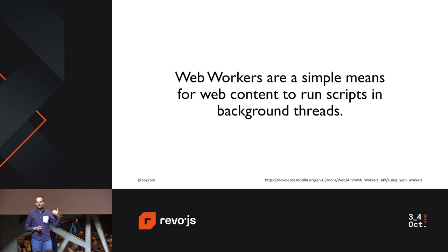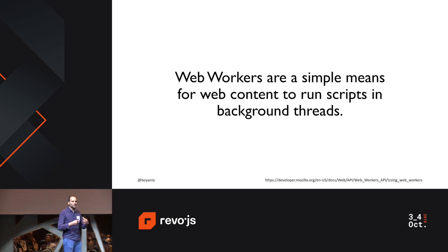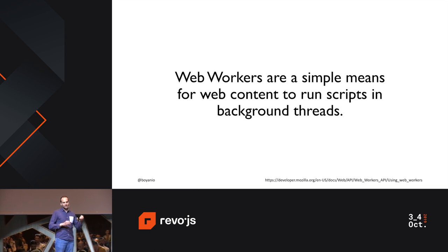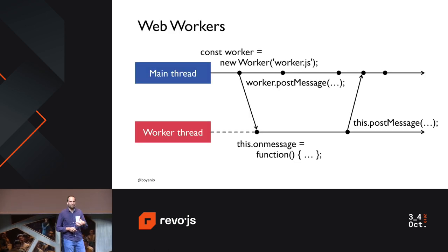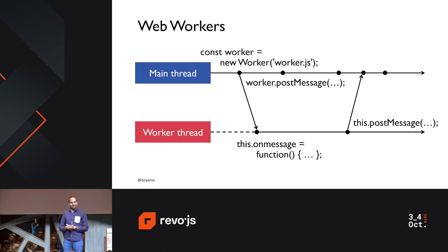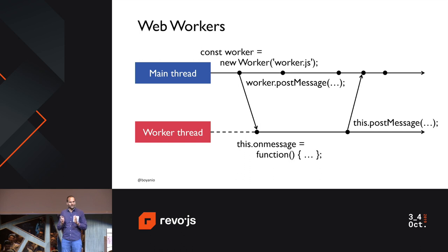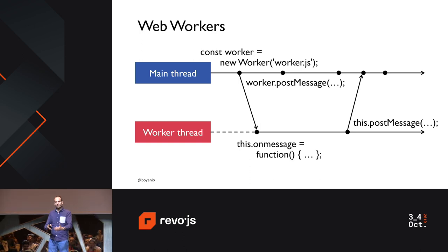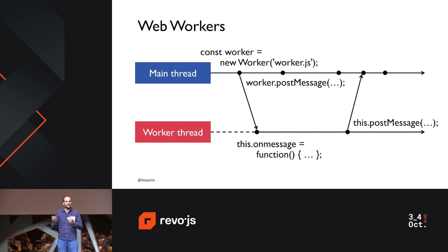The solution is called Web Workers — and while not new, it's the way to do threading on the web. If we have our main thread, we can create a worker thread and give it some JavaScript to execute, giving us a separate background thread running completely independently. However, because most JavaScript code is not thread-safe — since JavaScript is single-threaded — worker threads and main threads are completely isolated. They don't share anything. The only way to communicate between threads is using messaging: the main thread posts messages to the worker thread, and the worker replies back and forth.